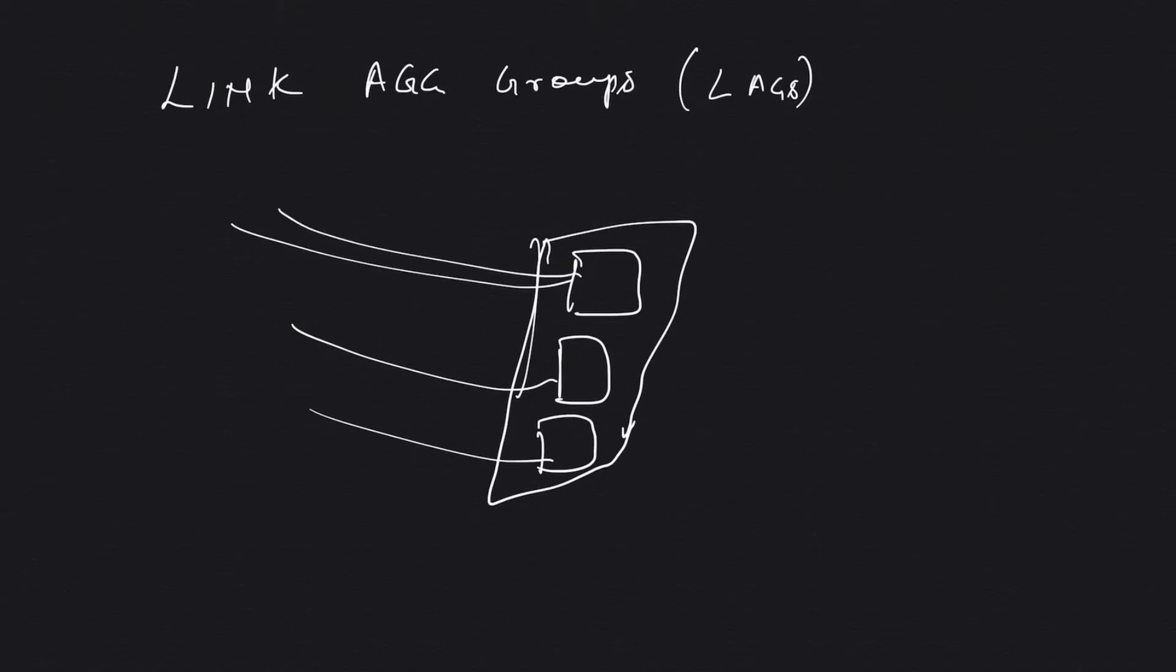But for Link Aggregation Group, your connection should basically terminate on a single device. It cannot be like this connection is terminating here, this is terminating here, this is terminating here, and you create a LAG of these—you cannot do that. All the connections must terminate on the same device and on the same AWS location. That's a prerequisite before you create your Link Aggregation Group.